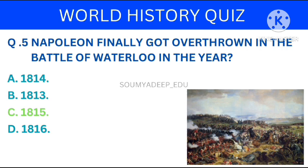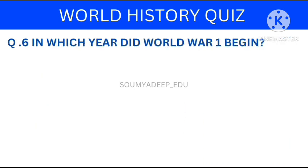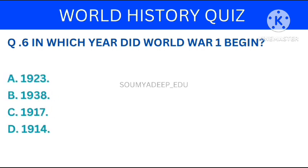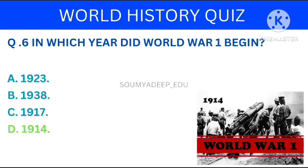So let's move to the next question. In which year did World War I begin? The options are: 1923, 1938, 1970, 1914. Your time starts now. The answer is 1914.